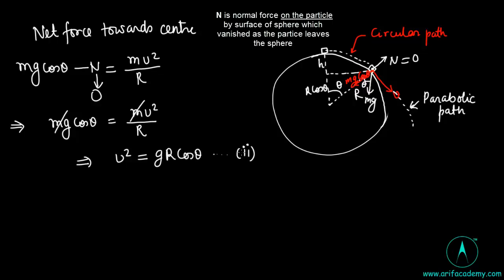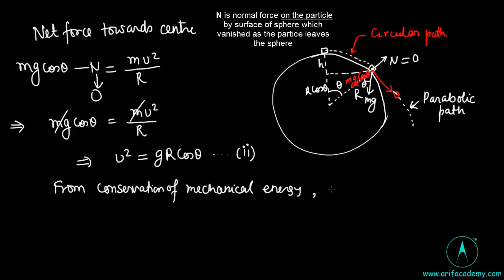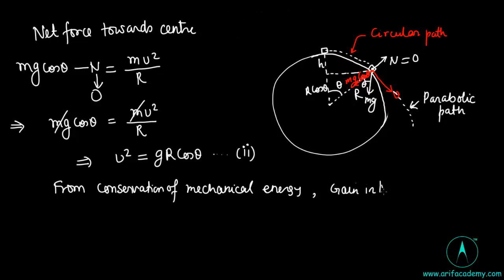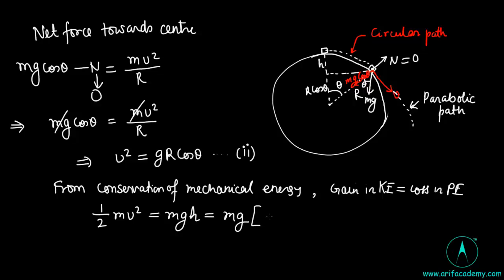As the particle comes down, its total mechanical energy is conserved. Mechanical energy is the sum of kinetic and potential energy, so the gain in kinetic energy comes at the expense of potential energy. From conservation of mechanical energy, gain in kinetic energy equals loss in potential energy: ½mv² = mgh, where h is the height descended. Substituting h = r(1 - cos θ), this implies v² = 2gr(1 - cos θ).